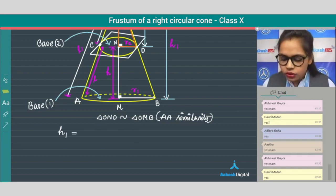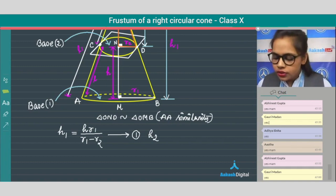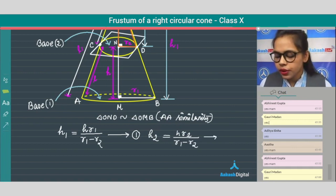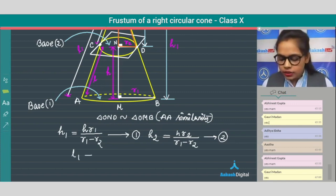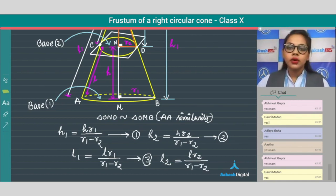Now here we can write some relations between h1, h2, h, l1, l2, and l. The relations are: h1 equals h r1 divided by r1 minus r2, which is equation 1. h2 equals h r2 divided by r1 minus r2, this is equation 2. Similarly we can get l1 equals l r1 divided by r1 minus r2, equation 3, and l2 equals l r2 divided by r1 minus r2.